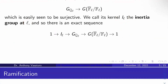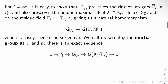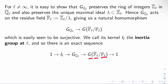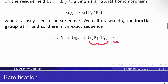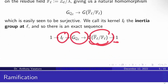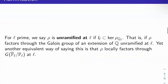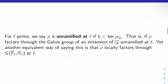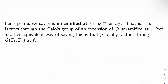One way of summarizing this is: there's a natural exact sequence 1 → I_L → G_{Q_L} → Gal(F-bar_L / F_L) → 1. In other words, G_{Q_L} mod I_L is isomorphic to that residual Galois group. This leads naturally to the concept of ramification. Given a Galois representation rho and a prime L, we say rho is unramified at L if the inertia at L is in the kernel of the local representation at L — that is, if rho factors through the Galois group of an extension of Q unramified at L.